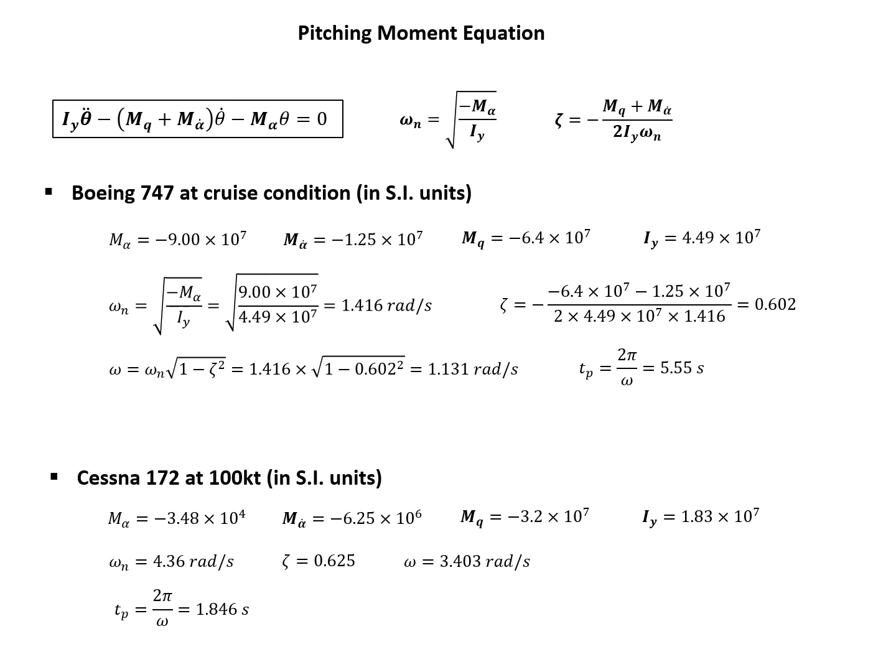So if we plug in the numbers, I'm not calculating, just show you the numbers, so the natural frequency is 4.36 radian per second, and the damping ratio is 0.625, and it's quite similar as the Boeing 747. And the frequency is 3.403 radian per second, and now if we see the period time is 1.846, so the period is slightly shorter than the Boeing 747.